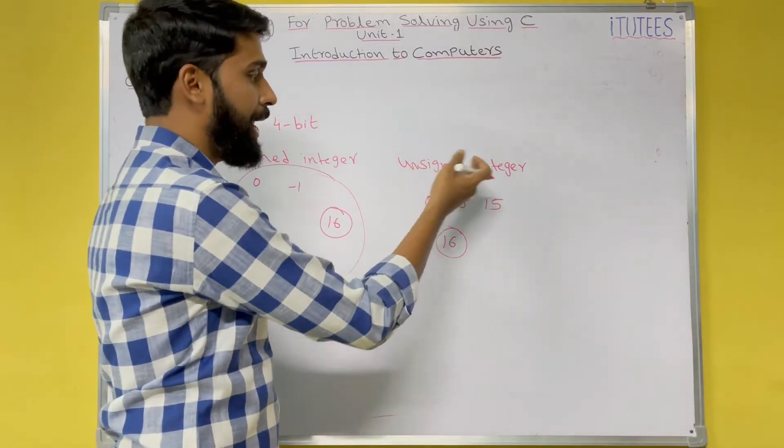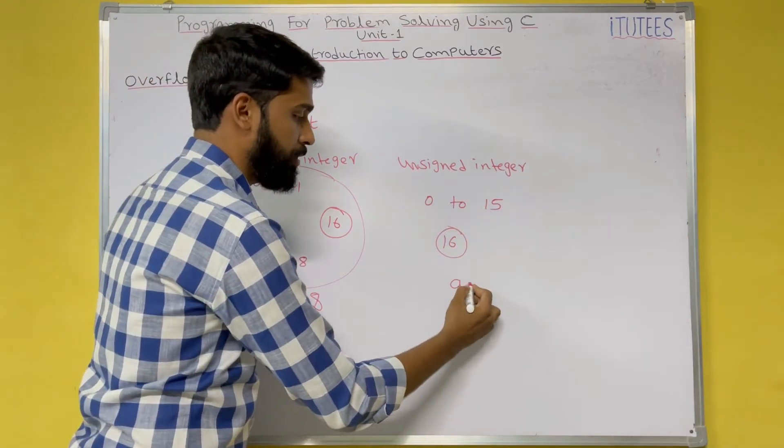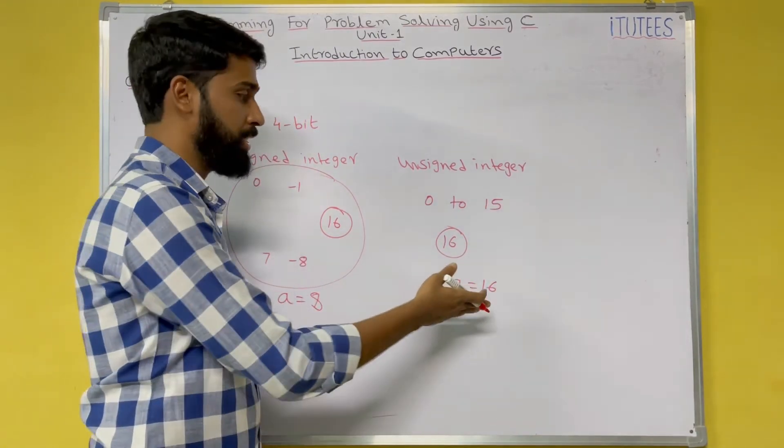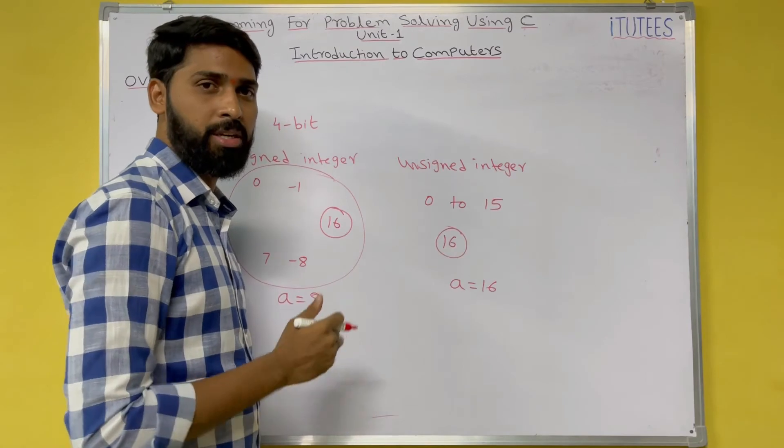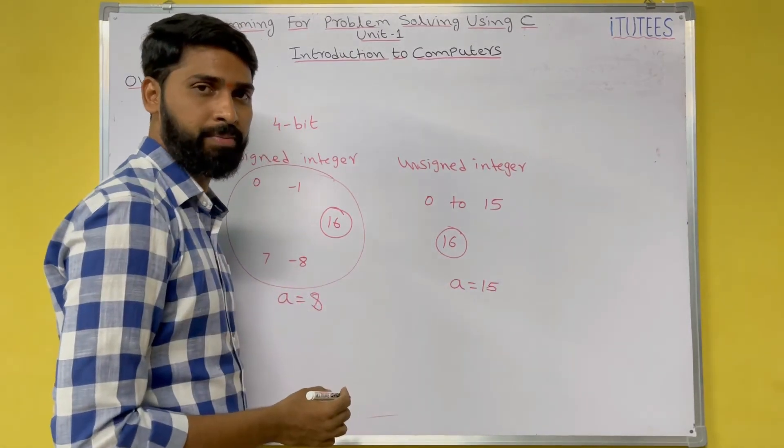Similarly, unsigned integer. Here the range is 0 to 15, but you are trying to give A equals to 16. 16 is not in this range, so it is overflow and it stores only 15.